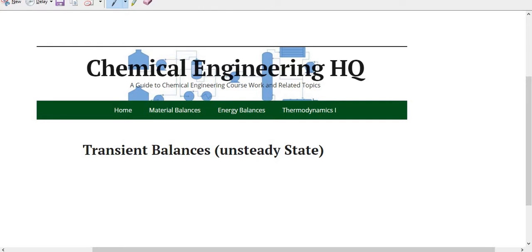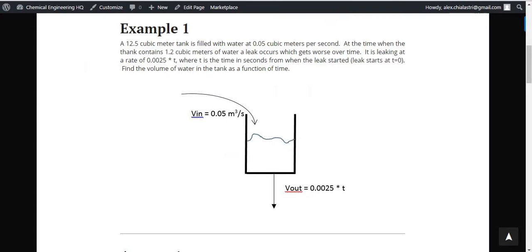Today, in chemical engineering, we're going to use material balances to solve unsteady-state problems. The example we're doing is example one from the unsteady-state section.